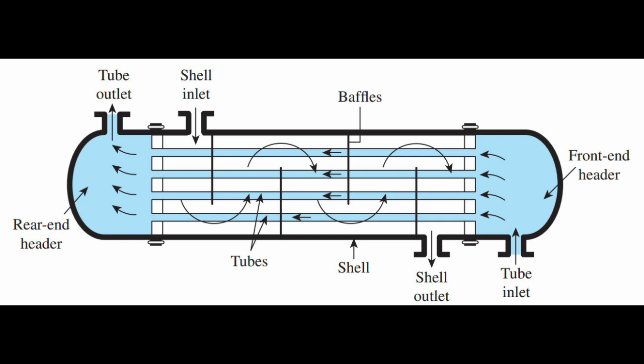This type of cooler uses a series of tubes and a shell to transfer heat from the refrigerant to a secondary fluid, such as water. The refrigerant flows through the tubes, while the secondary fluid flows through the shell. In a shell and tube type evaporator, water and refrigerant enter the cooler from opposite inlets to maximize the heat exchange process.